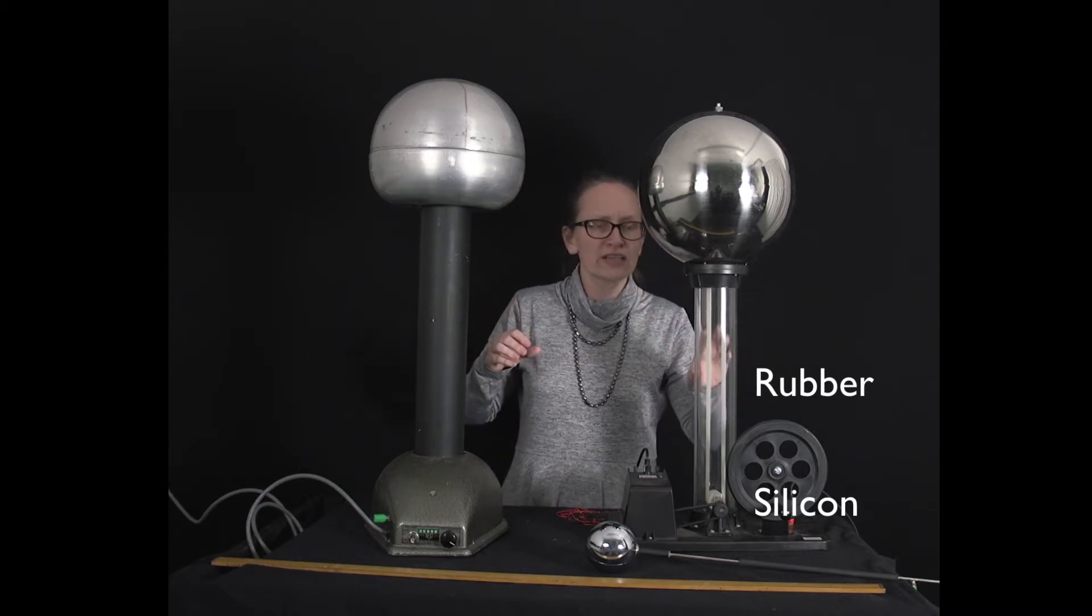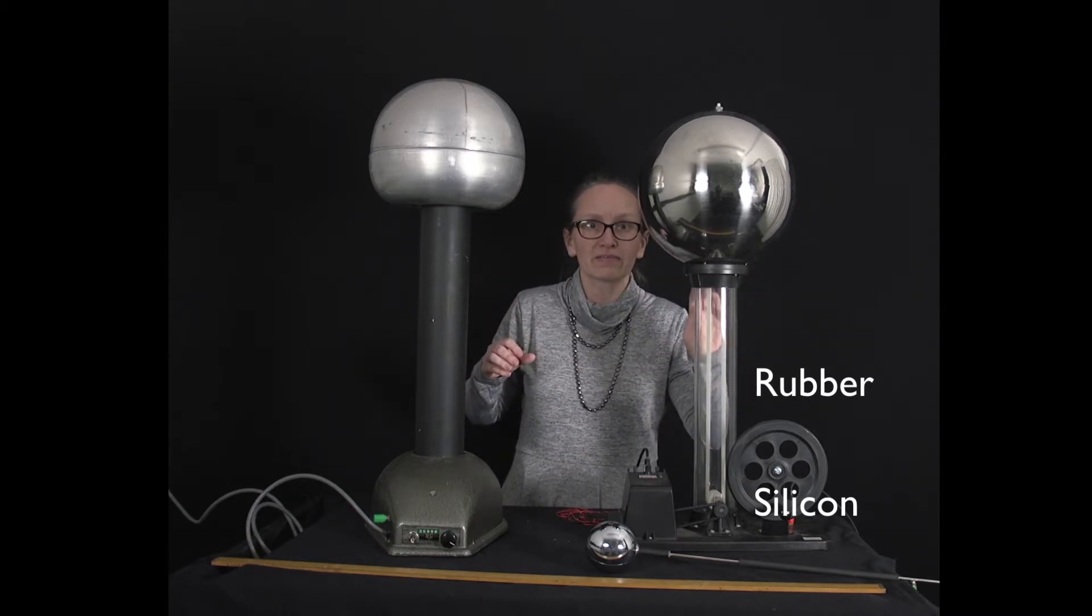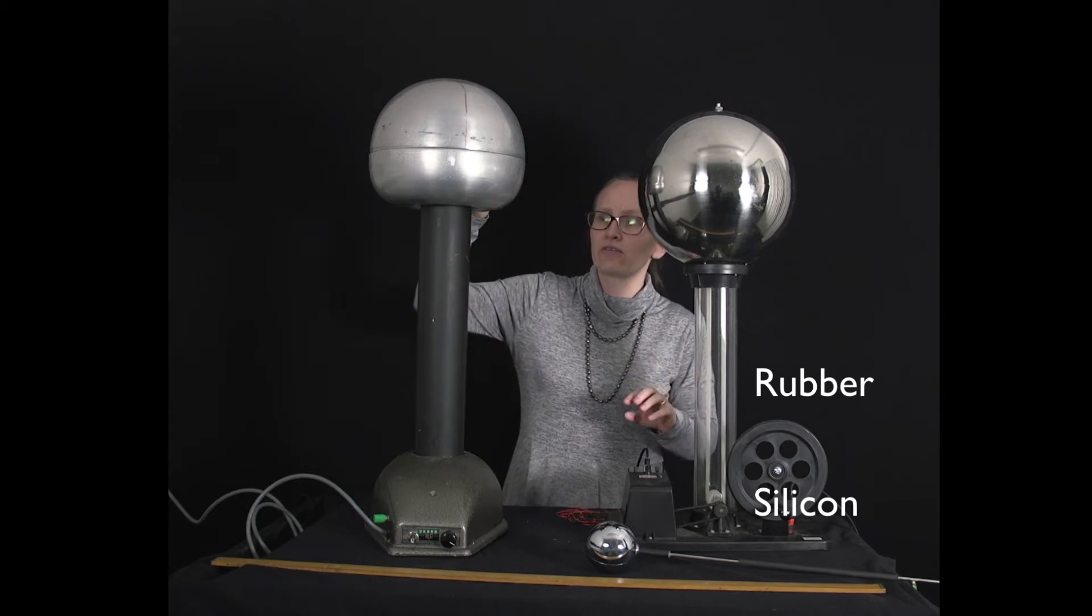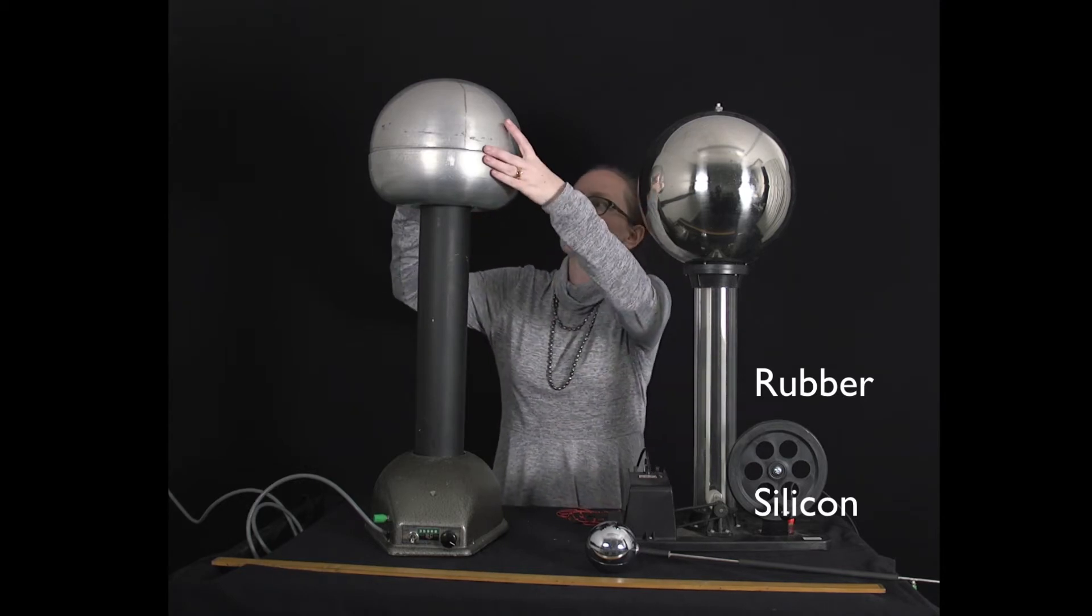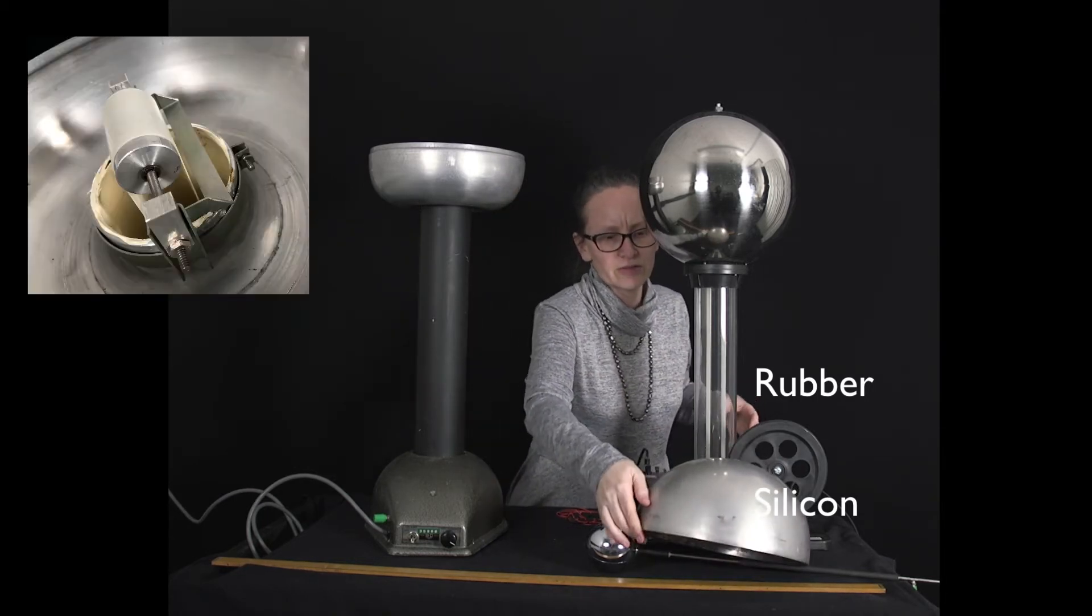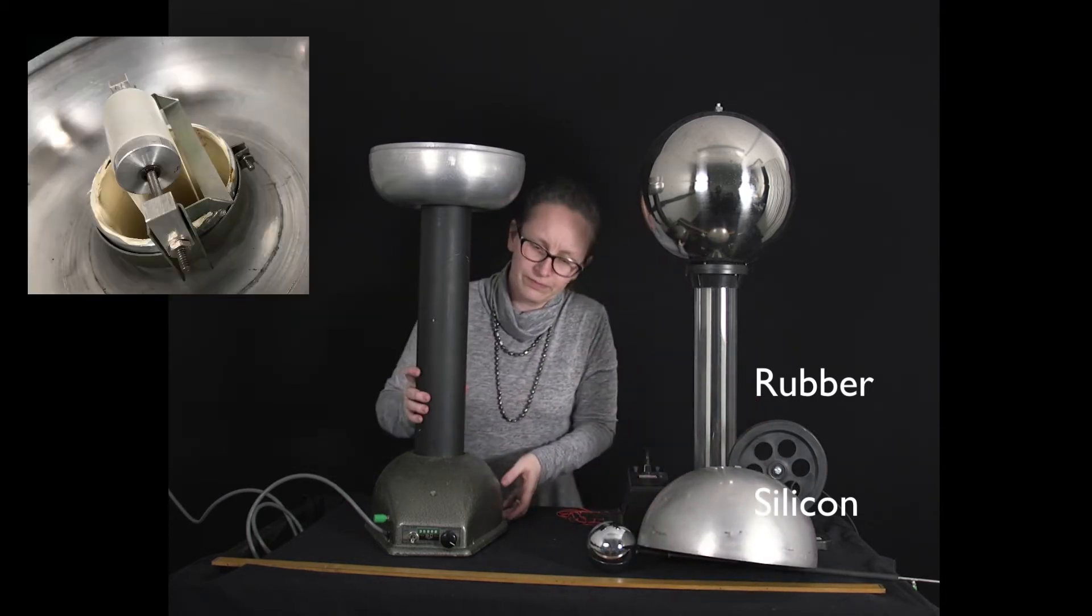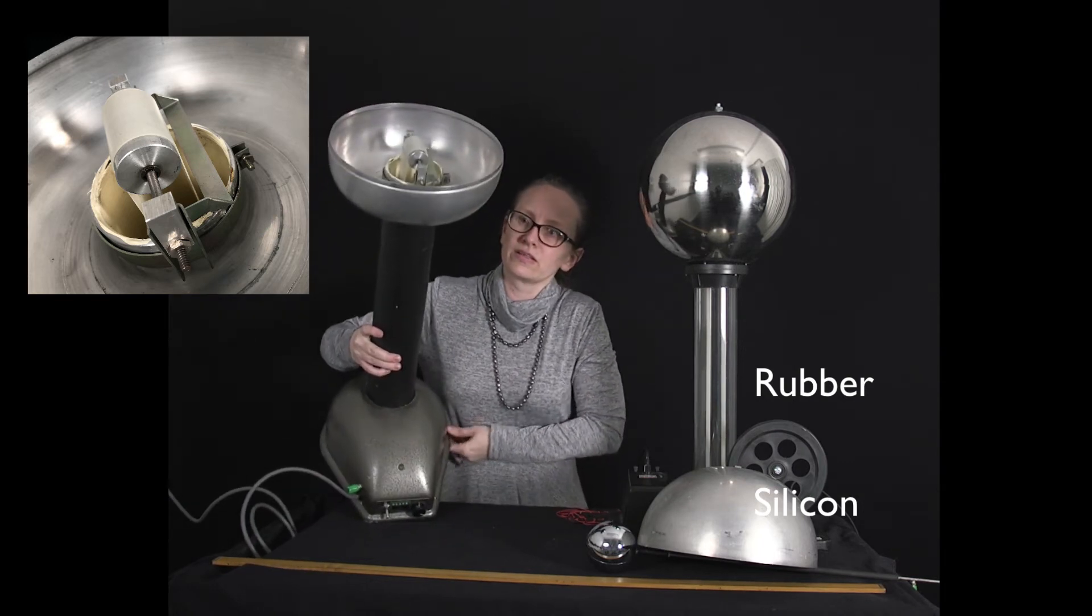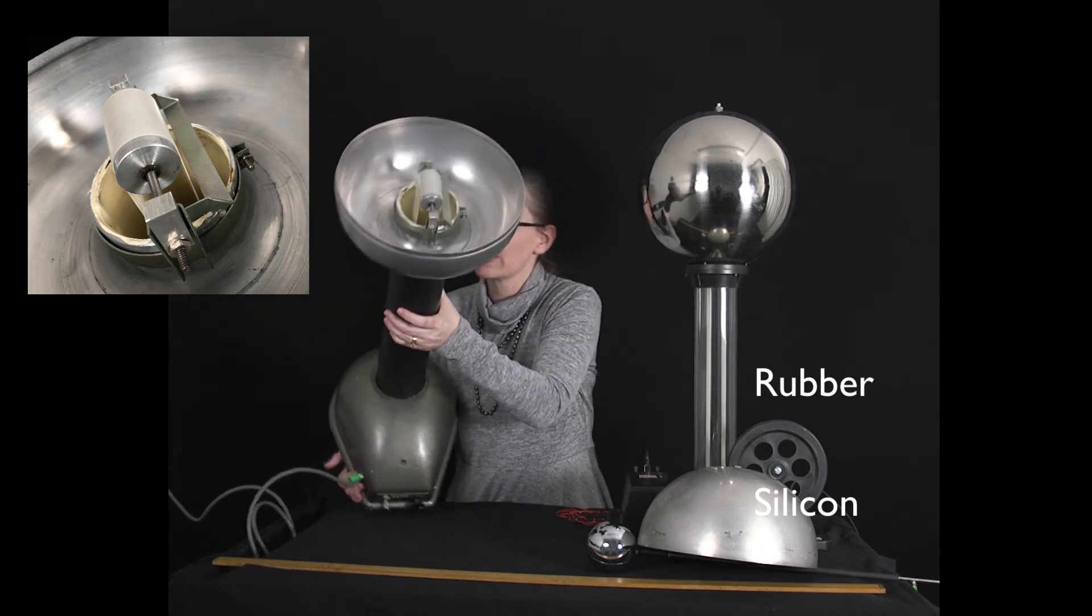So the positive rubber runner then runs over the top roller. Let's have a look at the top roller inside this Van de Graaff here. Take the top off—now you can see what's inside here.